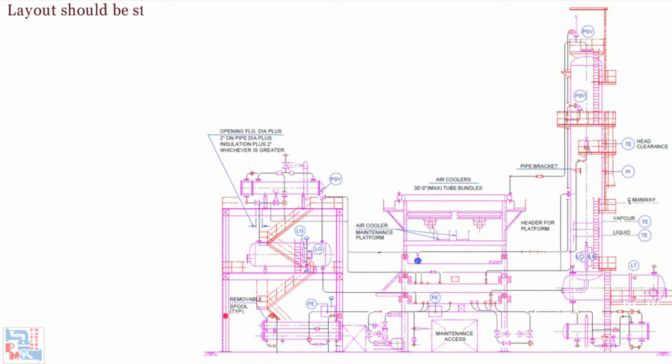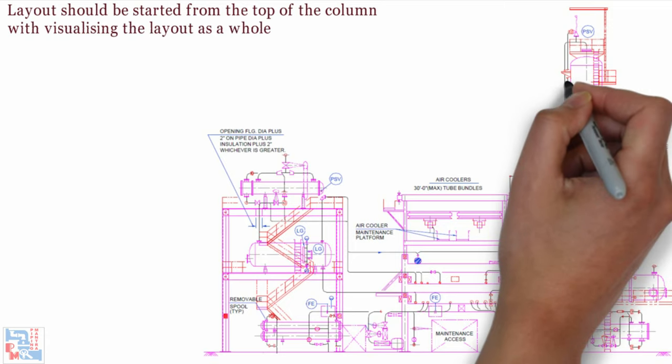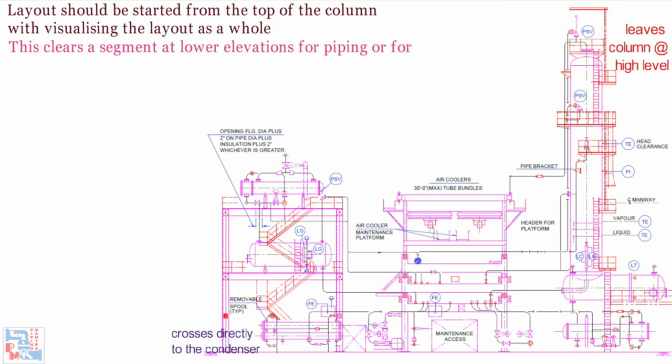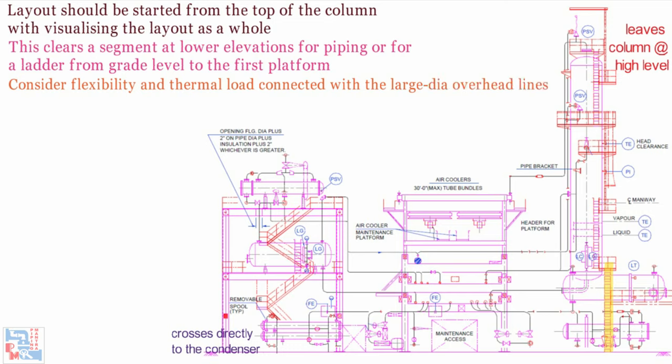Layout should be started from the top of the column with the designer visualizing the layout as a whole. There will be no difficulty in dropping large overhead lines straight down the side of a column and leaves the column at a high level and crosses directly to the condenser. This clears a segment at lower elevations for piping or for a ladder from grade level to the first platform. Consider flexibility and thermal load connected with the large dia overhead lines to the condenser at grade level or higher level.